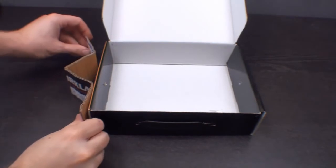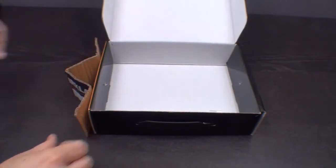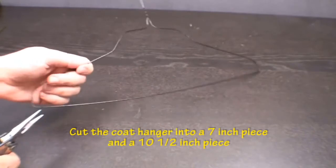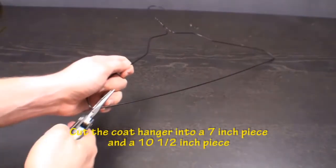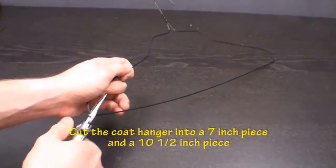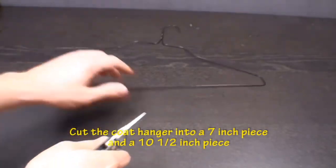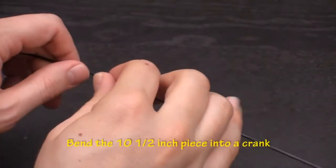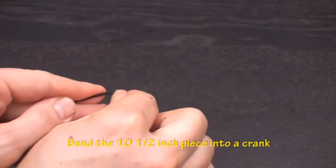Use the box the kit came in as the base for the winding mechanism. Take the coat hanger and cut it into a seven inch piece and a ten and a half inch piece. Bend the ten and a half inch piece into a crank.